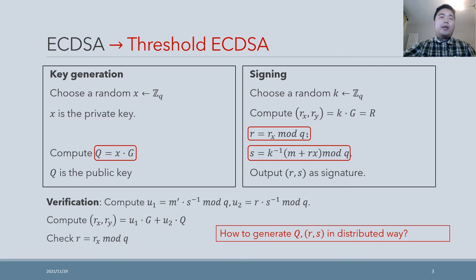Threshold ECDSA is one of the most famous threshold signatures. It is the threshold version of traditional ECDSA, which has been widely used in various applications such as TLS and SSH. The construction of ECDSA is shown on the slide. In order to construct threshold ECDSA, we must know how to generate the public key Q and the signature (R, S) in a distributed way.